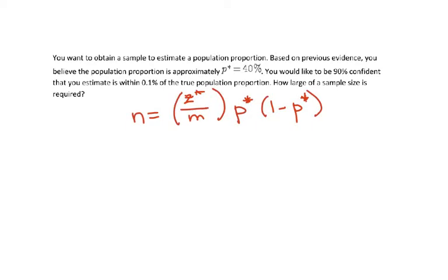So walking through this problem, you're finding n, which is your sample size that you need for a population proportion to have a margin of error of 0.1% if it's a 90% confidence interval. So we're solving for n, and we know that z star is 1.645 for a 90% confidence interval. And the m they give you is 0.1%, which is 0.001.